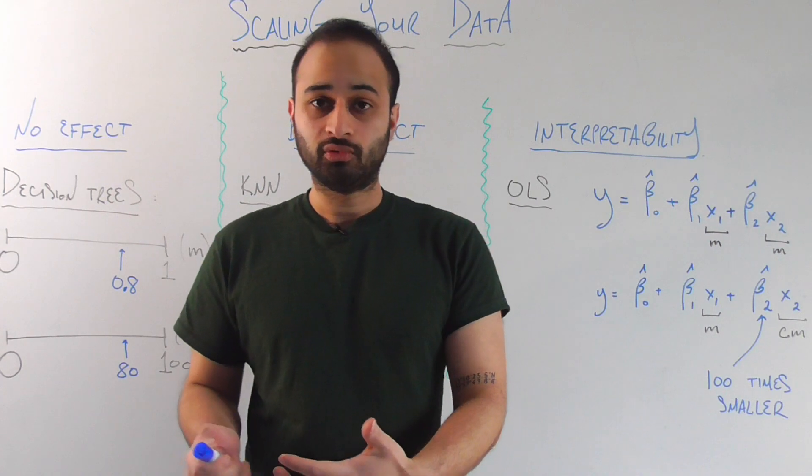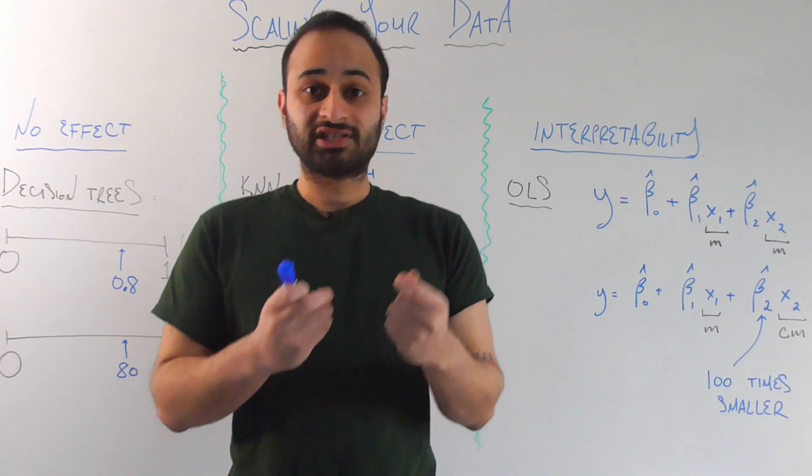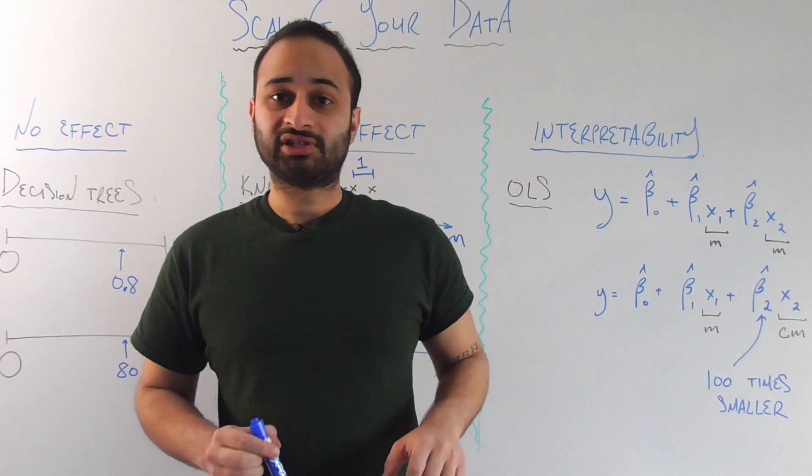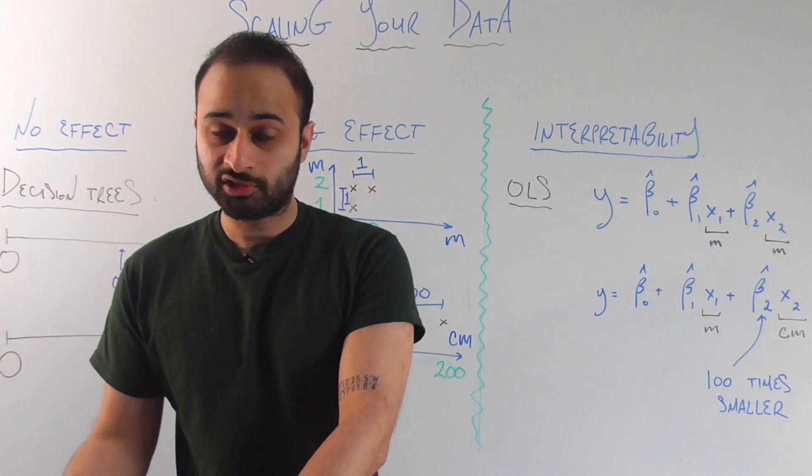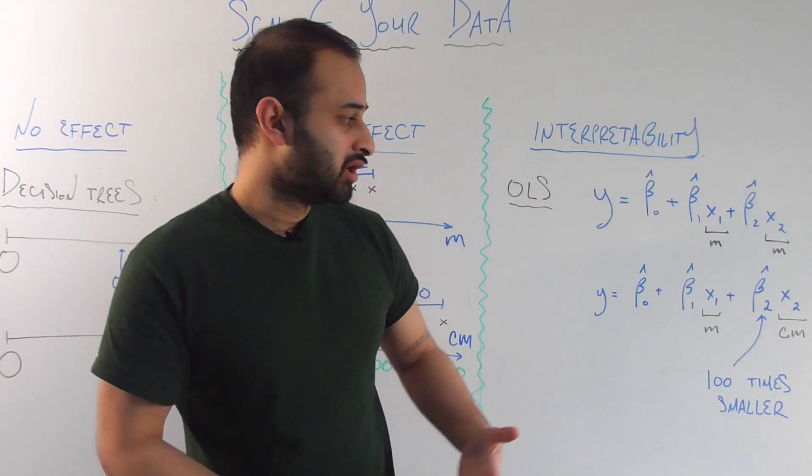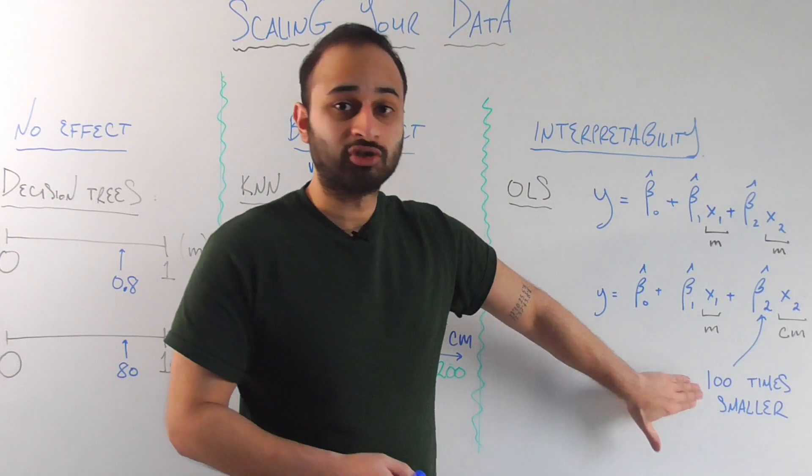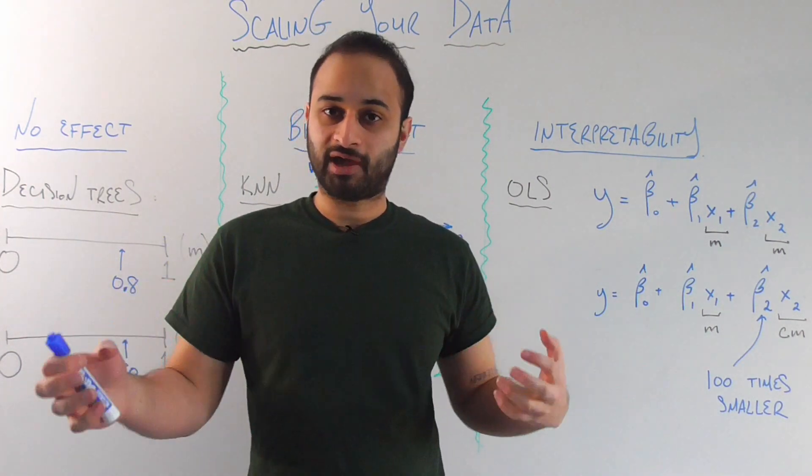But what does that mean for the new beta2? That means that because we have a hundred centimeters per meter, now increasing this quantity by one meter is the same as increasing it by a hundred centimeters, which is what it's now measured in. So that means that the beta2 we get now, the new beta2, needs to be a hundred times smaller in order to account for that.